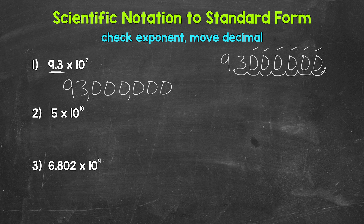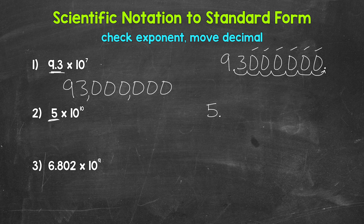Let's move on to number 2, where we have 5 times 10 to the 10th power. Let's write 5 off to the side. The decimal comes after a whole number, after the ones place, so the decimal is right here and we need to move it. Our exponent is 10, a positive 10. 5 is increasing in value here, so we have a large number. We need to move the decimal to the right — 10 places: 1, 2, 3, 4, 5, 6, 7, 8, 9, 10.